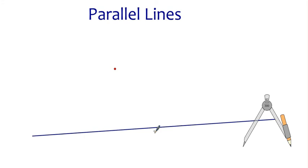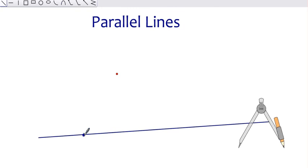We'll start by selecting a point on the given line, doesn't matter where, and we'll take our straight line tool and draw a line that starts at that point and goes through the given point.